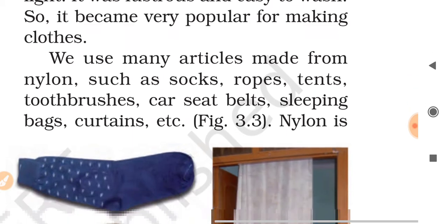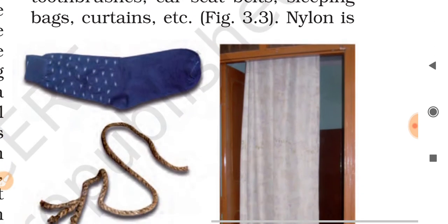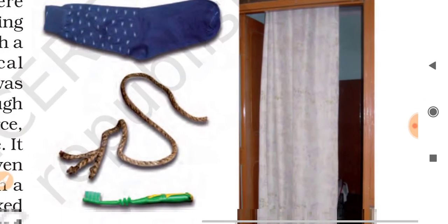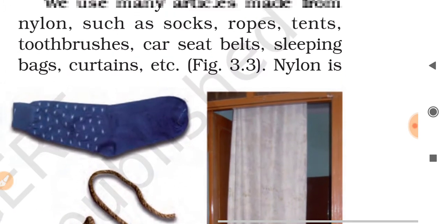We use many articles made from nylon such as socks, ropes, tents, toothbrushes, car seat belts, sleeping bags, curtains, etc., as you've seen in figure 3.3. These socks, ropes, toothbrushes, and curtains are made from nylon.